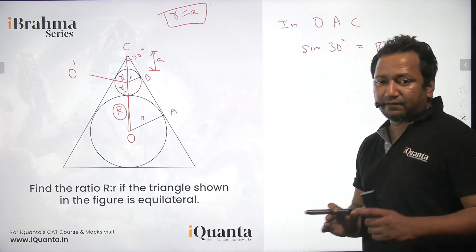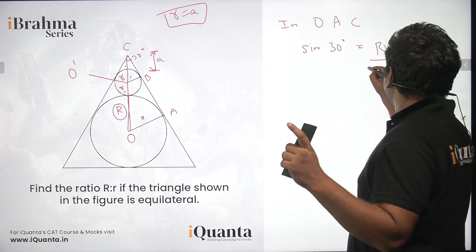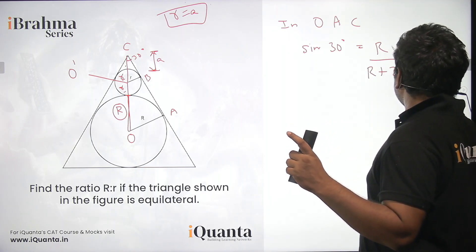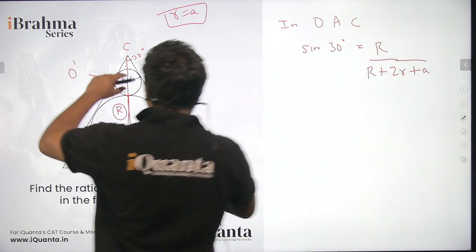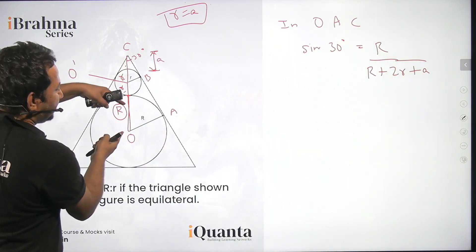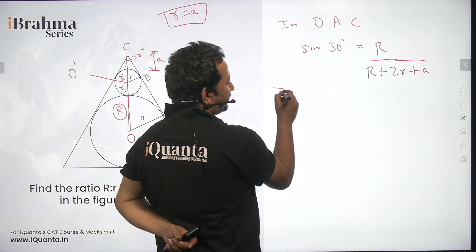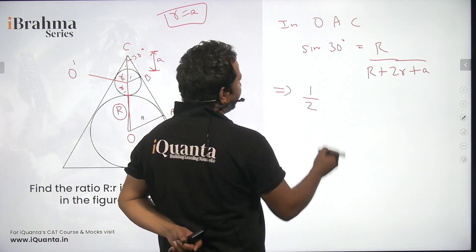So overall we have the hypotenuse as capital R plus two times small r plus a. As you can see here these are two r's, capital R plus small r plus small r plus a. Now I can write sine 30 is one by two.